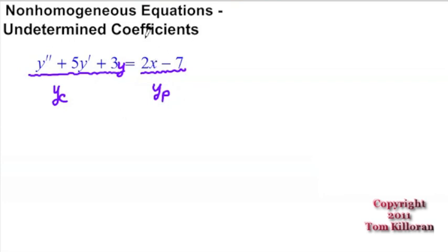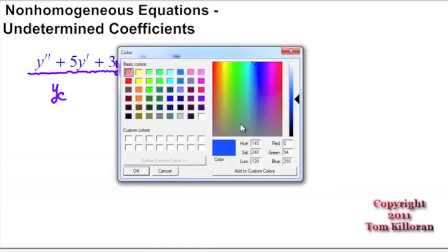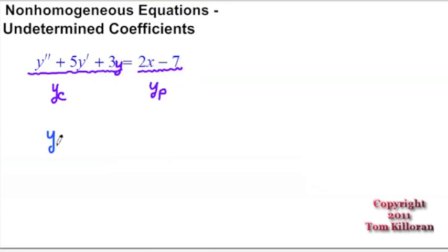The concentration for the first part here is just going to be finding a particular solution. This is a linear equation, and we're going to have to plug a function into y, take its derivative and plug it in, then take the solution and plug it into y double prime. The way we're going to get 2x minus 7 after taking first and second derivatives is more than likely going to have a linear quality to it. So I'm going to make a guess — let's guess that our particular solution, y sub p, is going to be a linear function in x: some ax plus b.